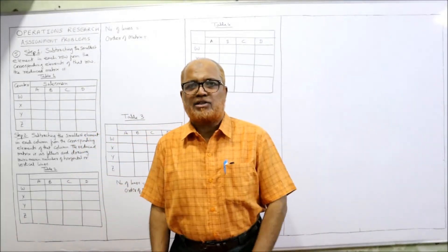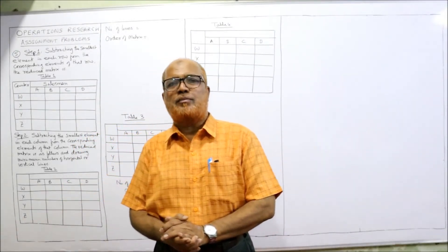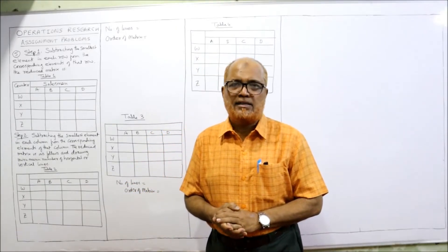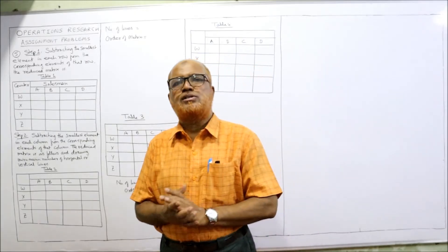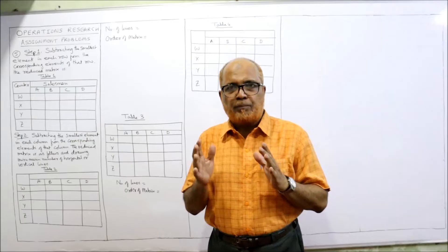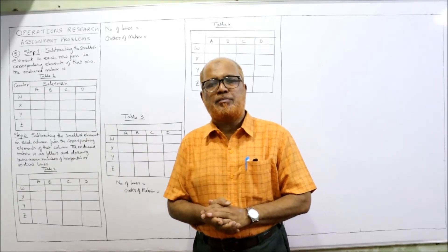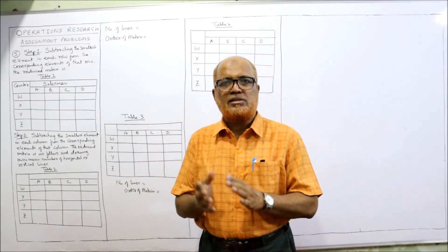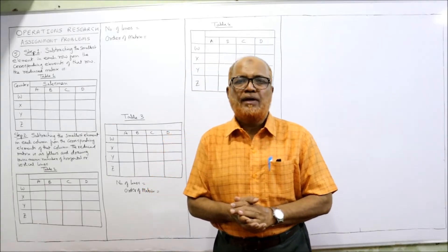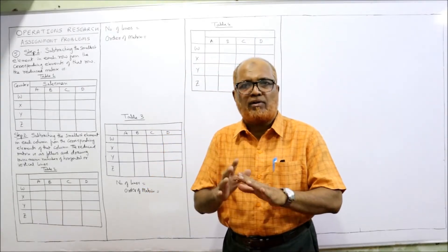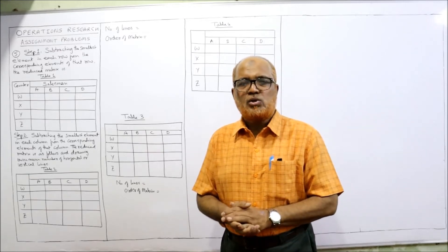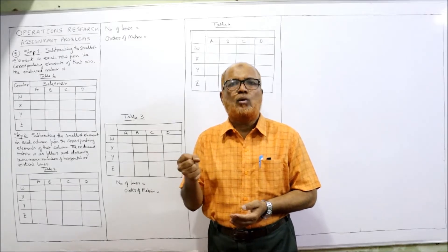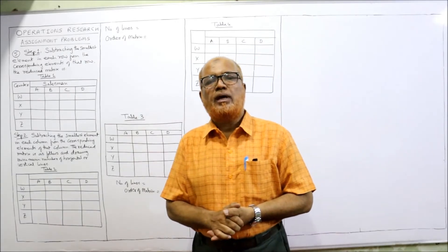Hello viewers, welcome to my channel. I am Hashem Ali Khan. So far I have completed four problems on assignment. Comparatively, I told you these problems are very easy compared to other transportation problems or simplex method. The algorithm of assignment problems given by Hungarian mathematician D. Koenig is very simple: first step row subtraction, second step column subtraction, then draw minimum number of lines to cover all the zeros. Watch all the videos from the beginning to get full confidence, and by practicing you can easily do the problems.